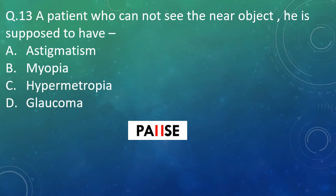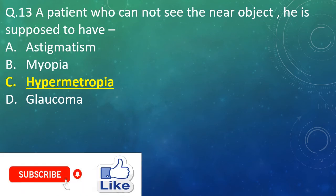Question 13: A patient who cannot see near objects is supposed to have which condition? Option A: astigmatism. Option B: myopia. Option C: hypermetropia. Option D: glaucoma. And the right answer is Option C — hypermetropia.